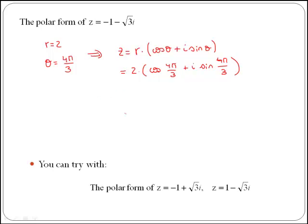You can try now with these other two complex numbers: Z equals minus 1 plus the square root of 3i, which is a number that will be placed in the second quadrant, and Z equals 1 minus the square root of 3, which will be an angle placed in the fourth quadrant.